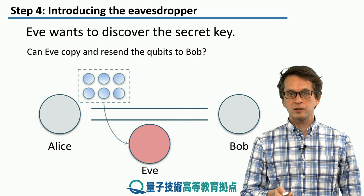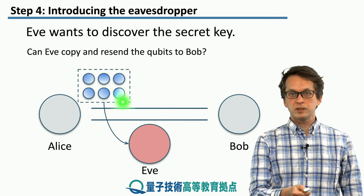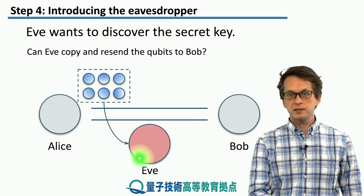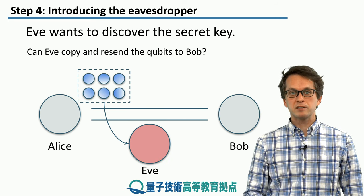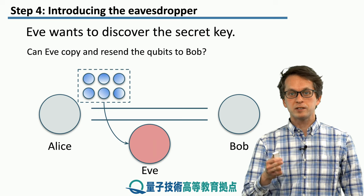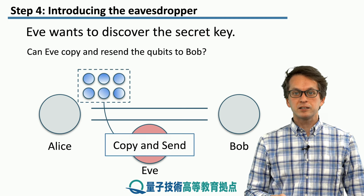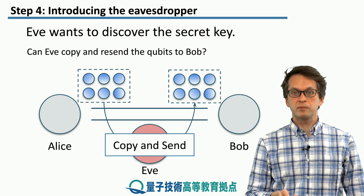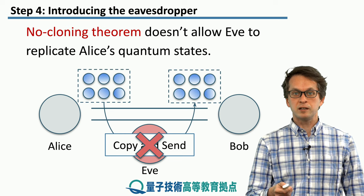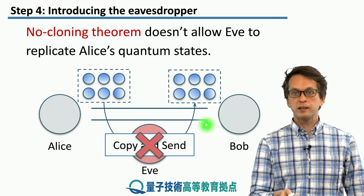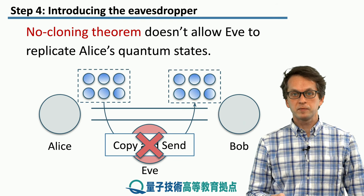So what can Eve do? Let's assume that she can take the qubits that Alice is sending over the public quantum channel to Bob — she intercepts them. Can she copy them and then resend them to Bob? That would give her access to the protocol and the qubits, and subsequently the secret quantum key. Luckily, she cannot do that due to the no-cloning theorem, as we have seen in the teleportation lesson. So she cannot simply take them, make a copy of the qubit, and then resend the qubits to Bob.